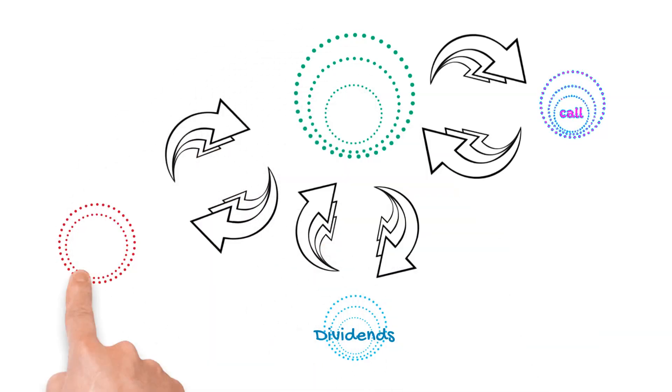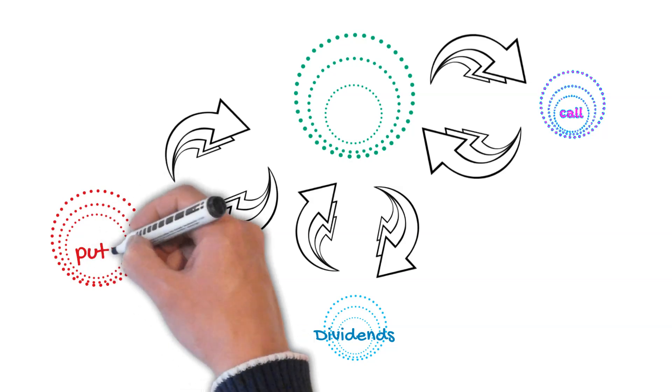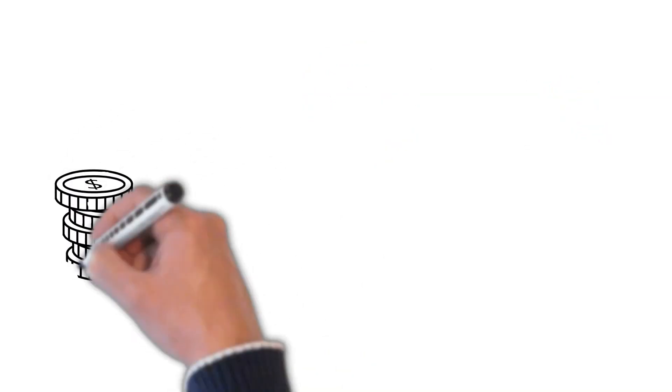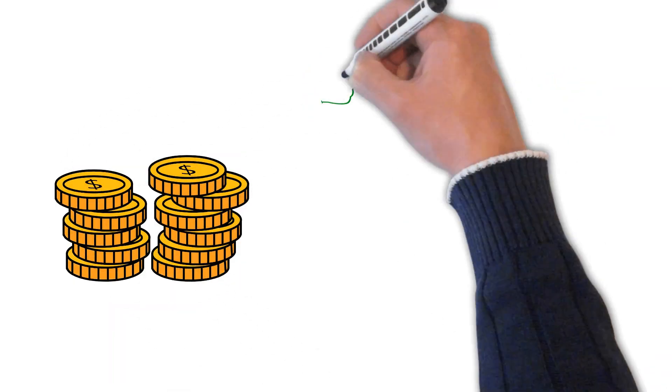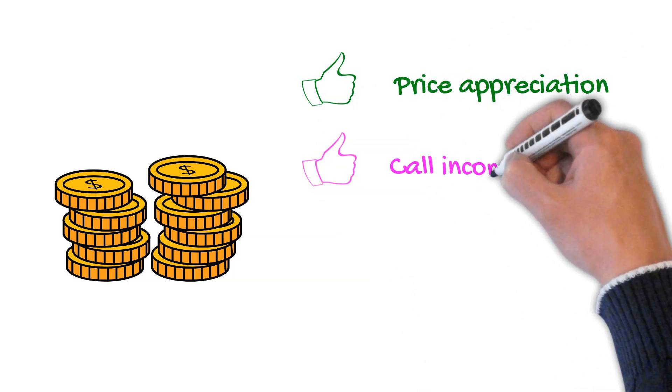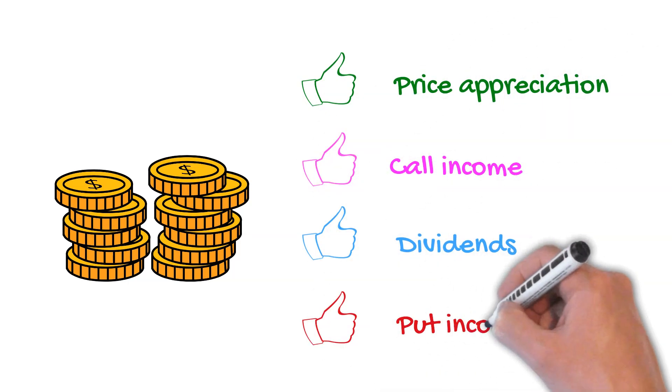For accounts above $25,000, this compounding effect also occurs with put options. We make money four ways: increasing share price, call income, dividends, and put income.